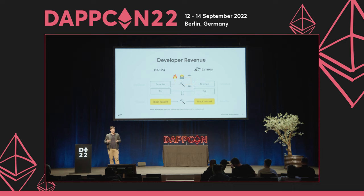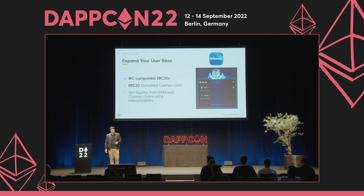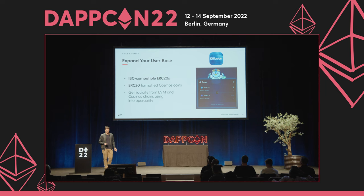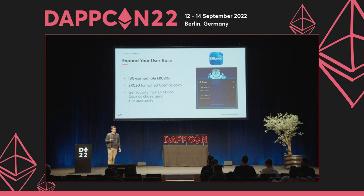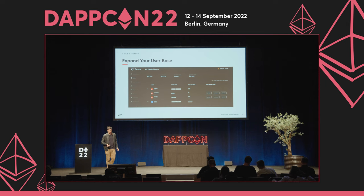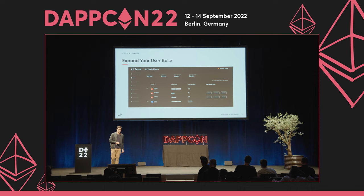We want developers to earn revenue and not have to worry about multiple integrations. Expanding the user base into the Cosmos ecosystem, which is one of the largest and fastest growing ecosystems besides Ethereum, is key. Here we can see Diffusion, which is a fork of Uniswap V2 deployed on Evmos that is already using native Cosmos tokens represented as ERC-20s on the Evmos EVM. Now you can access even more liquidity by deploying on Evmos, and we support different ecosystem tokens including USDC from multiple chains and more than four IBC ecosystem chain tokens.